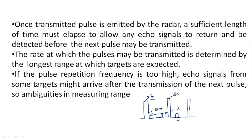The rate at which pulses may be transmitted is determined by the longest range at which targets are expected. If the pulse repetition frequency is too high, echo signals from some targets might arrive after the transmission of the next pulse, leading to ambiguous range measurements. To avoid this, we need sufficient off periods. Let us look at the formula for maximum unambiguous range.